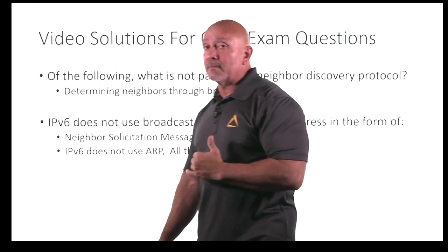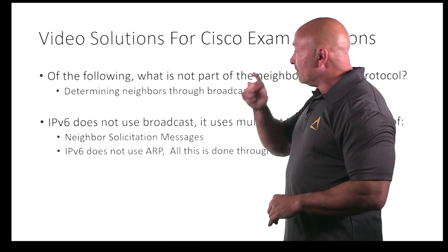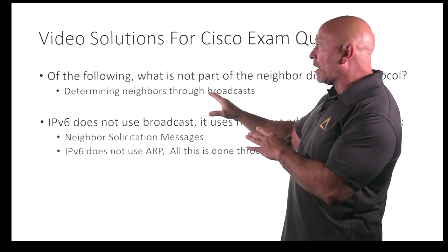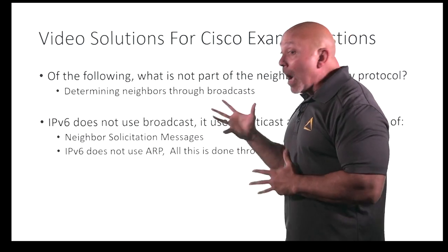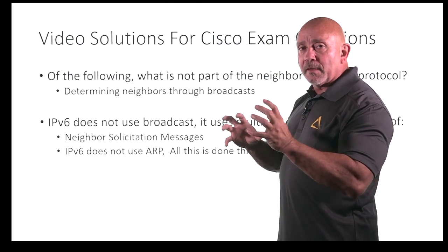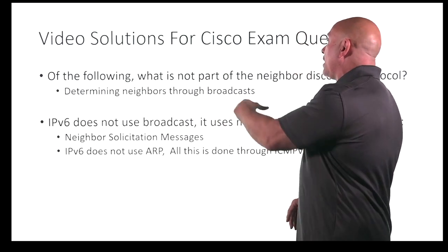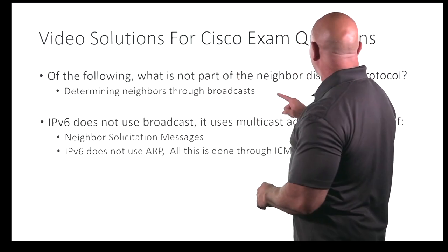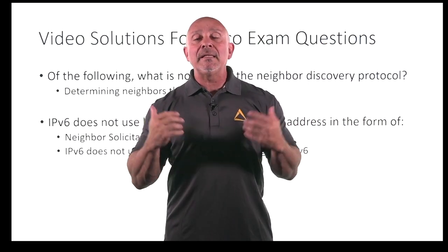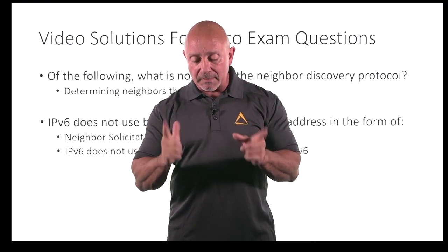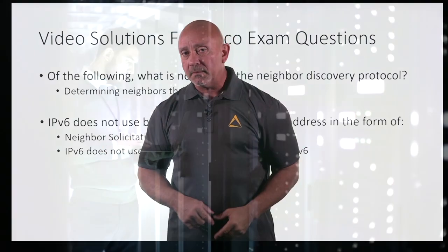Neighbor solicitations, neighbor discovery — all that stuff is in IPv6. Be careful when reading the question, especially these types of questions where they say 'is not' — this is not part of the whatever, so be careful with that 'not.' When you see Neighbor Discovery, it's obviously dealing with IPv6. Just keep that in mind: no broadcast in IPv6. See you in the next one.